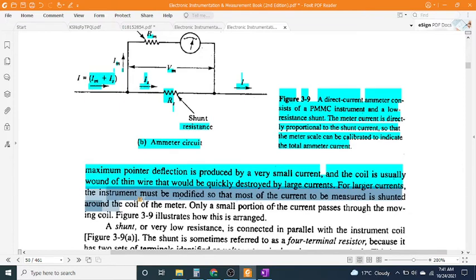For larger currents, the instrument must be modified so that most of the current to be measured is shunted around the coil of the meter. Only a small portion of current passes through the moving coil.